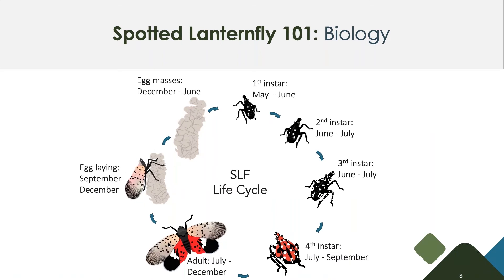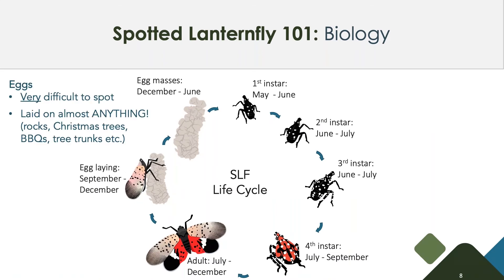Let's talk about their life cycle, starting with the eggs. The eggs are a real big vector problem — this is generally how Spotted Lanternfly are moving around. They're really difficult to spot and laid on almost anything: rocks, trees, barbecues, tree trunks. Heather Leach showed a talk where there was an egg mass on a woman's straw hat. Just if it's outside, they might get eggs laid on it.